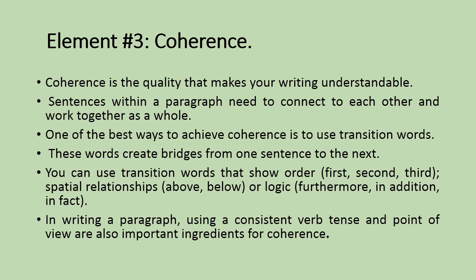The third element of a good paragraph is called coherence. Coherence is the quality that makes your writing understandable. Sentences within a paragraph need to connect to each other and work together as a whole. One of the best ways to achieve coherence is to use transition words, which create bridges from one sentence to the next.